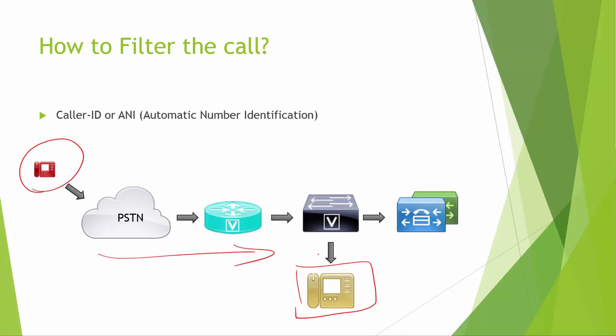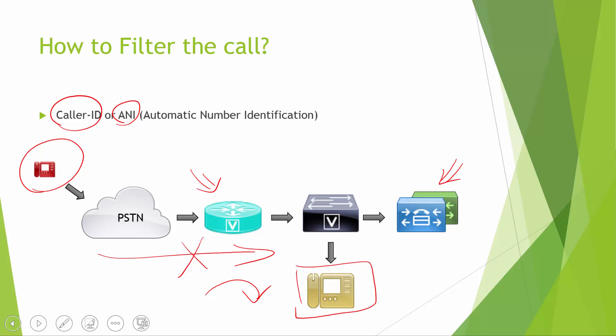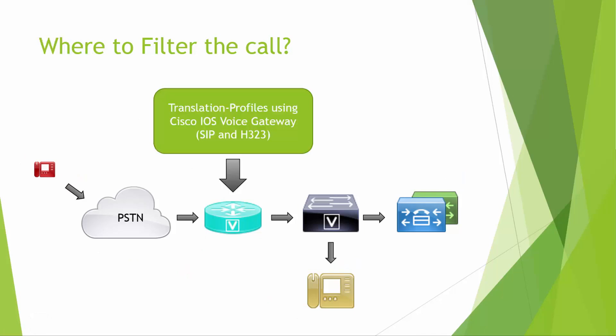What we can do is find the ANI or caller ID of those malicious calls and define certain rules either on the voice gateway or the UCM to match that ANI. Once it matches, the call can be either blocked or redirected to external applications like Unity or Unified CCX. In the next few slides we'll discuss the different methods to filter these calls and where to apply those filters.